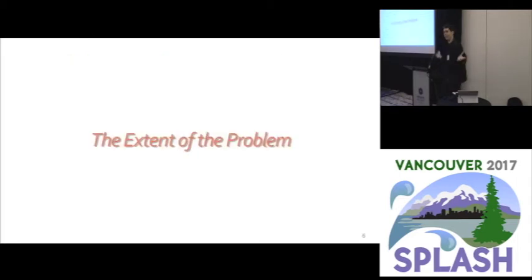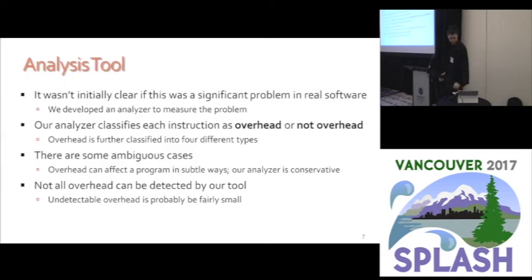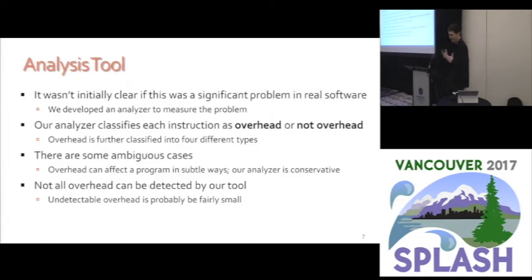That was obviously a very contrived example — I designed it to make the problem look horrible, like 50% of your program is just moving things around. Of course that's not really true, and we had no idea how bad this problem was in real software. So our first task was to see how bad it actually is in real programs. We came up with an analysis tool that runs through a binary and makes a judgment on each instruction on whether it is part of calling convention overhead or not — though some cases are a little ambiguous.